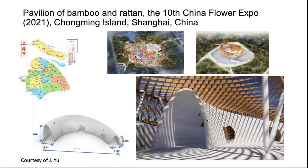A fairly recent application in China: at a flower expo in Shanghai, ECC was used to form an interesting thin-wall structure about six meters high and roughly 20 meters long. Notably, there is no steel reinforcement inside at all — this can truly be described as a non-metallic structure with just ECC, taking advantage of the high tensile ductility of the material.